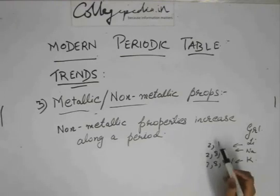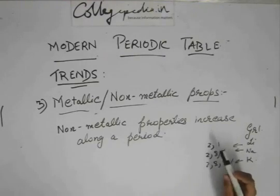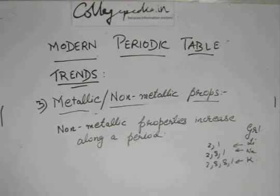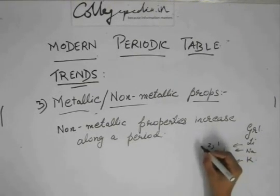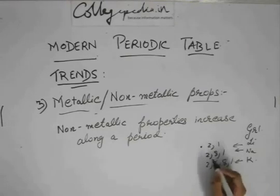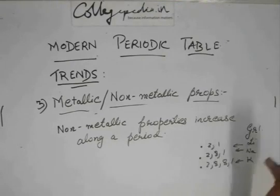In lithium there are only two shells, so the outermost electron is very close to the nucleus. In sodium there are three shells, so it is a bit farther from the nucleus. In potassium there are four shells, so the outermost electron is quite far away from the nucleus.